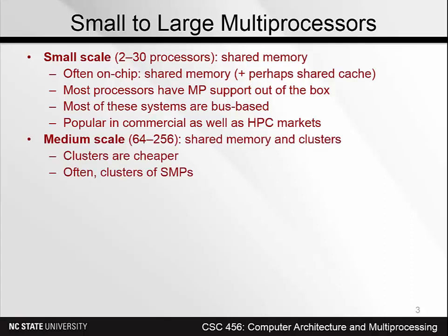Medium-scale multiprocessors have shared memory, but they also work in clusters, where a processor may be able to reach any of the memory in the cluster directly, but might have to go over a message-passing type network to get to other clusters. The reason they build these systems in clusters is because they're cheaper, and often the clusters are clusters of SMPs — symmetric multiprocessors — like the small-scale multiprocessors described above.